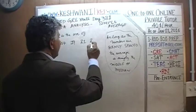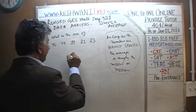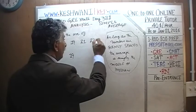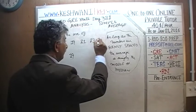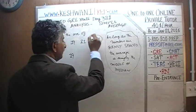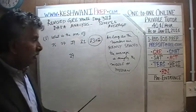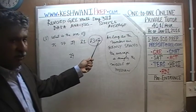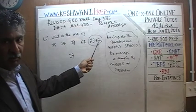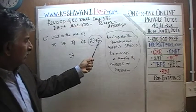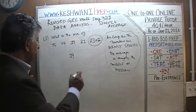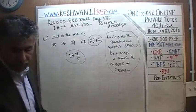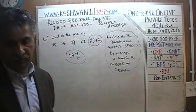Had it been 23, the average would have been 19. But it's not 23 — it is one more than that, it's 24. So what do we do with that extra one? That extra one has to be divided among five people. The new average is simply 19 and one-fifth.